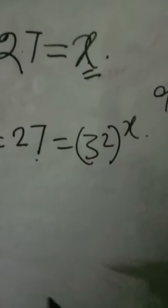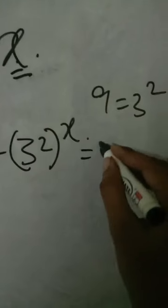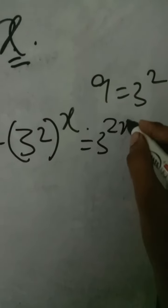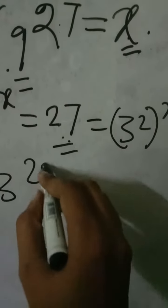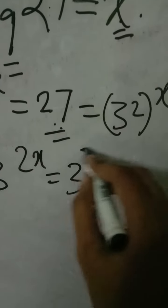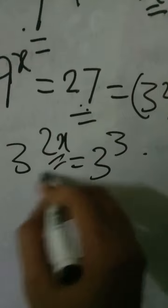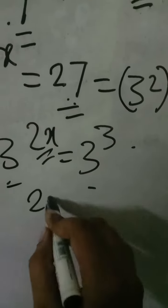So 3^(2x) equals 27. Now 27 equals 3 to the power 3. So that means since the bases are the same, 2x equals 3.